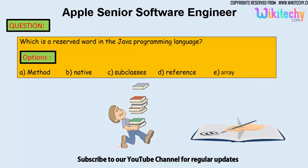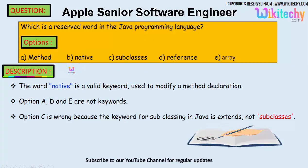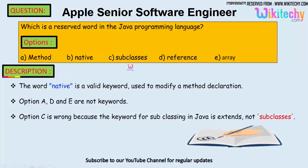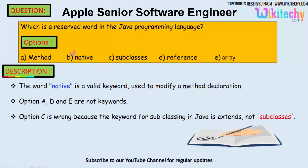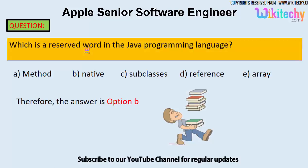Let's see which is a reserved word. The word native is a valid keyword used to modify a method declaration. Method is not a reserved word. Reference and array are not reserved words or keywords. Option C is wrong because in Java, subclasses are referred to using extends, not subclasses. So the answer is option B — native is a reserved word in the Java programming language.